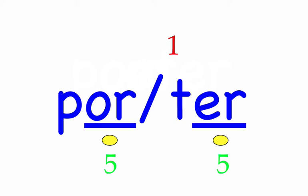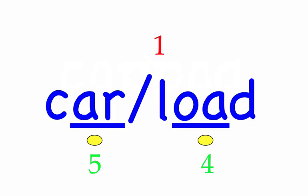Our final row ten. Carload. There was a carload full of young children. First syllable: car, two sounds, K-R. Second syllable: load, three sounds, L-O-D. Carload — mark the word.